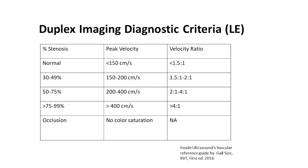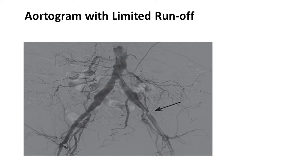Duplex ultrasound of the legs is used to assess for blockages using flow velocities. Normal peak velocity is less than 150 centimeters per second; severe stenosis approaches 200 to 400 centimeters per second. An aortogram image taken in the cath lab is also shown, with an arrow pointing to the external iliac artery demonstrating a blockage in this patient — illustrating what we can encounter when performing this imaging.